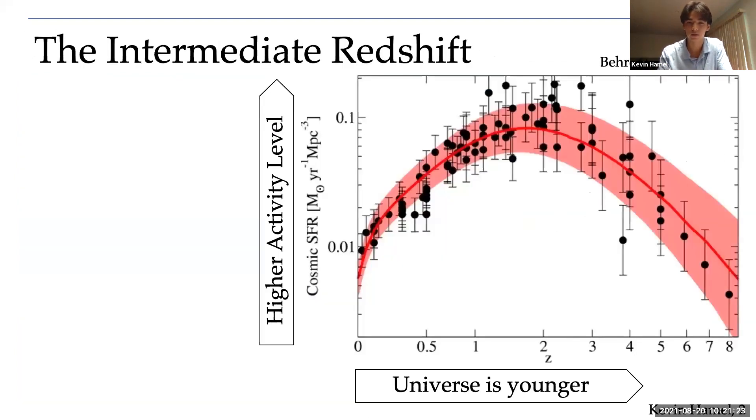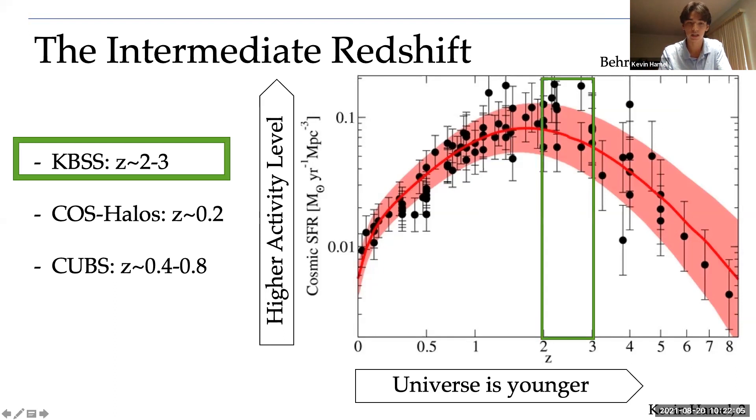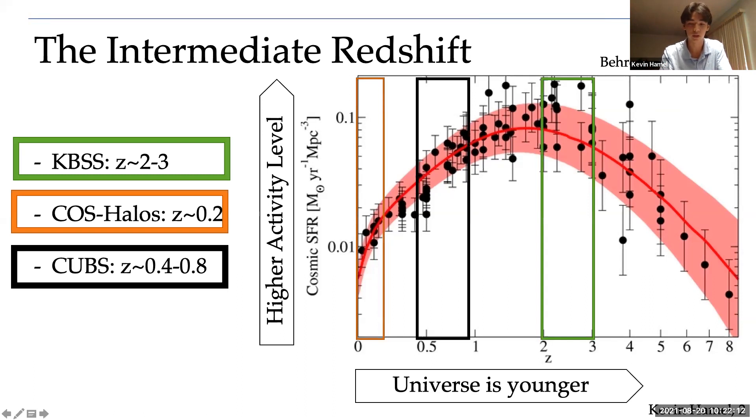Now I want to give you more context on what I mean by intermediate redshift. This Madau plot shows the cosmic star formation rate density throughout the history of the universe. The activity level increased up to a peak, known as cosmic noon, before it started decreasing to today's low levels. There's been CGM studies done in the z equals 2 to 3 regime by the KBSS project, and in our local universe by teams such as COS-HALOS. But few measurements have been made in between, and we're trying to bridge that current gap.